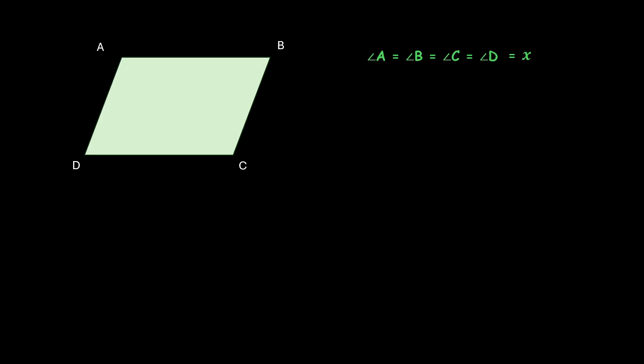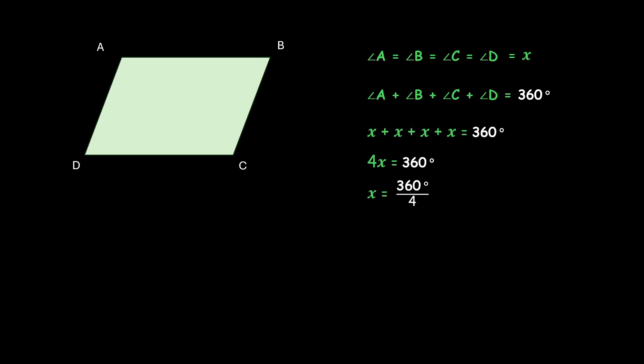Now, what if we draw a parallelogram in which all the angles are equal? A is equal to B is equal to C is equal to D, and let them each equal X. Since it is a quadrilateral, the sum of all angles will be 360 degrees. So angle A plus B plus C plus D equals 360 degrees, that is X plus X plus X plus X equals 360 degrees, so 4X equals 360 degrees, which gives us X equals 90 degrees.